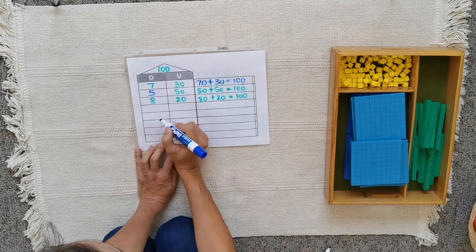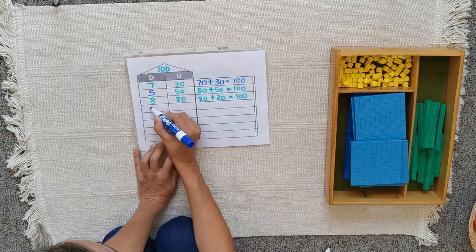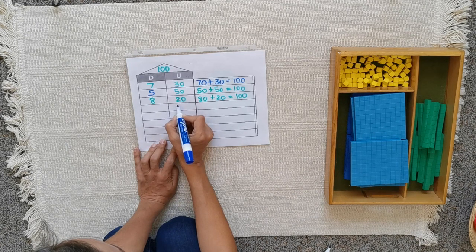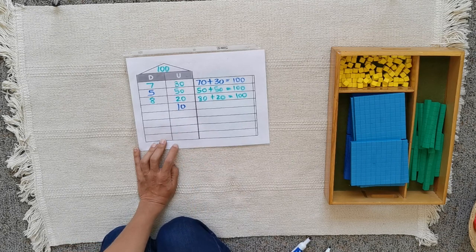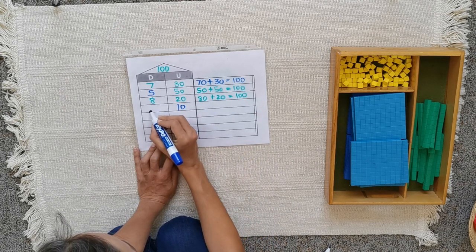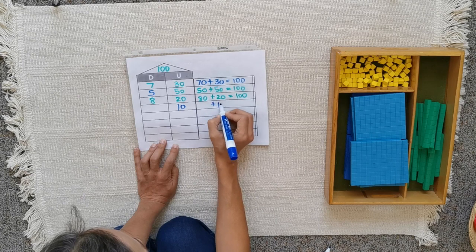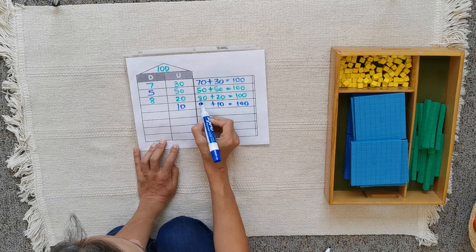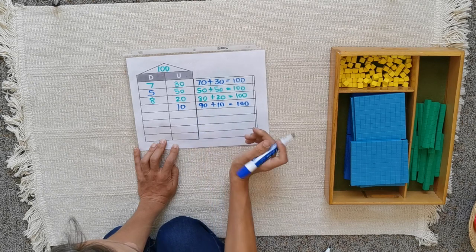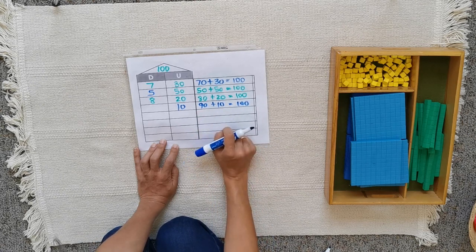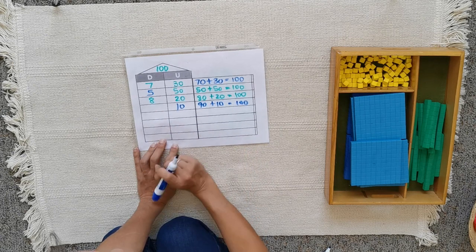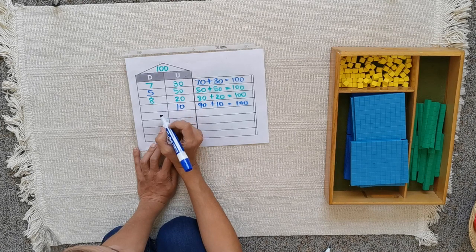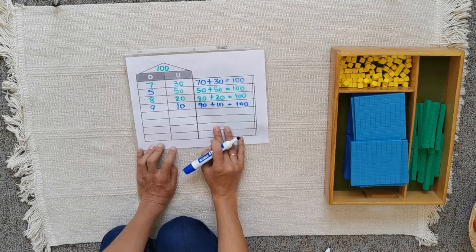Now it's my partner's turn. Ten. Ten ones. Put the same thing. Something plus 10 needs to make 100. And I know that 90 plus 10 makes 100 because 9 plus 1 is 10. But I cannot put just 90 because they are tens, so how many tens are in 90? Nine.